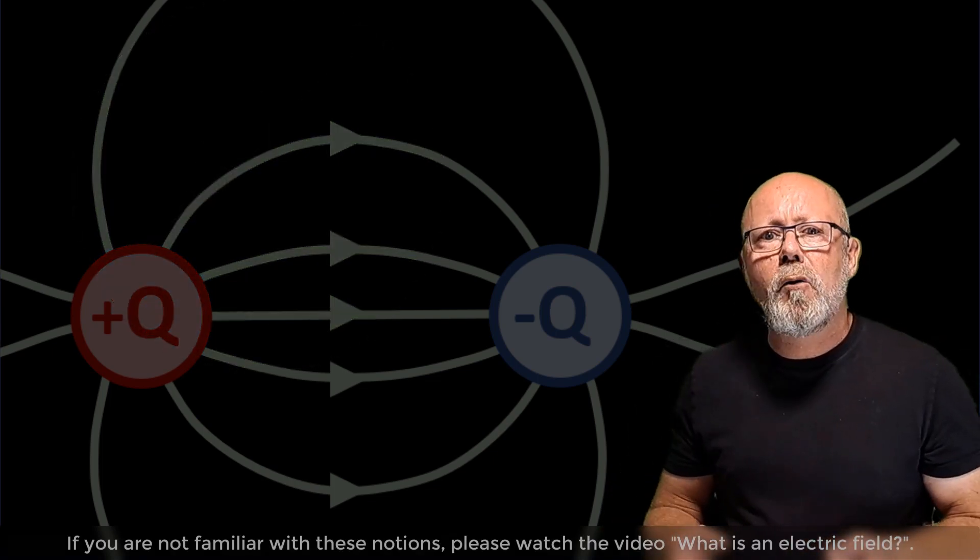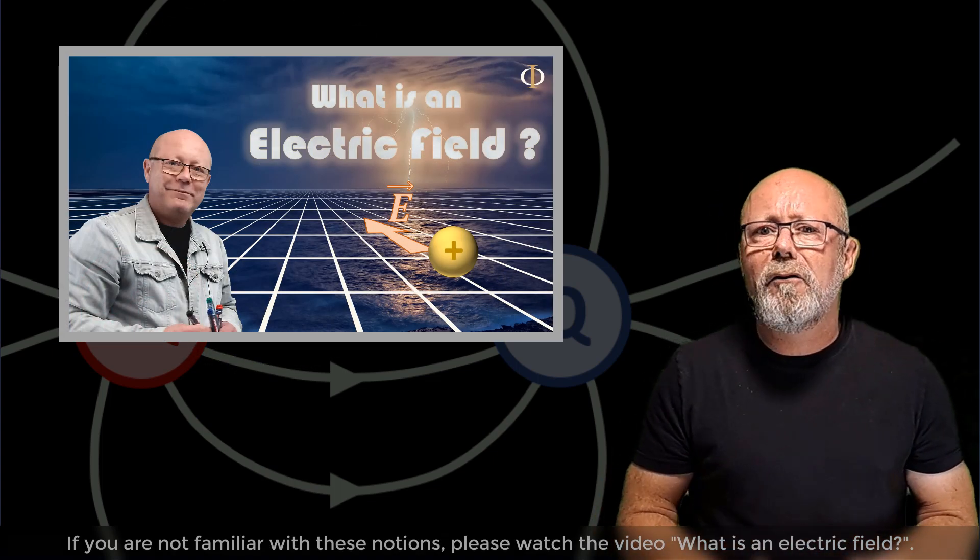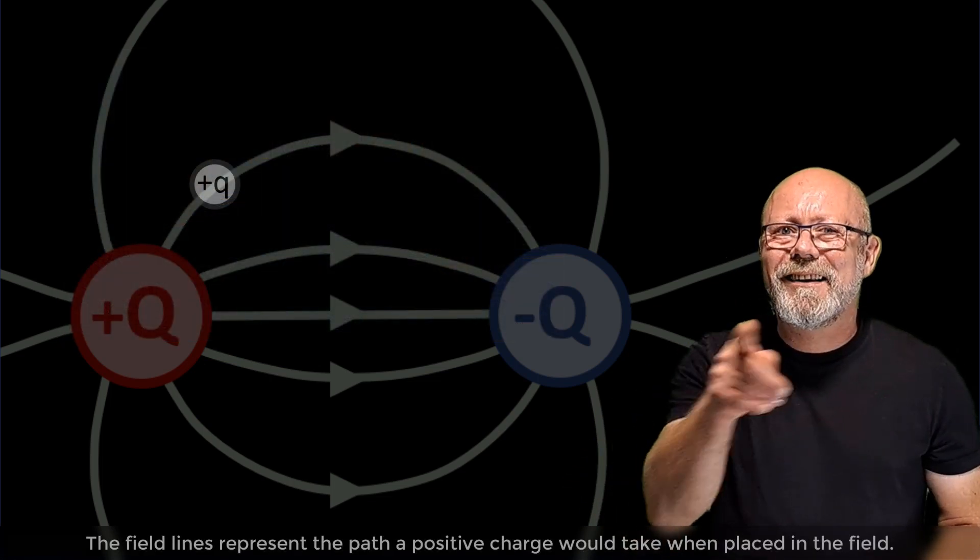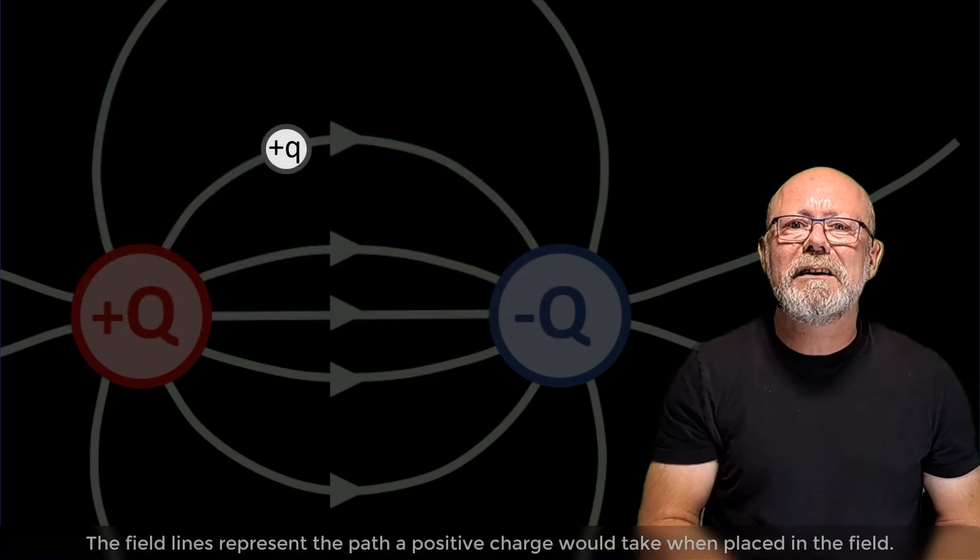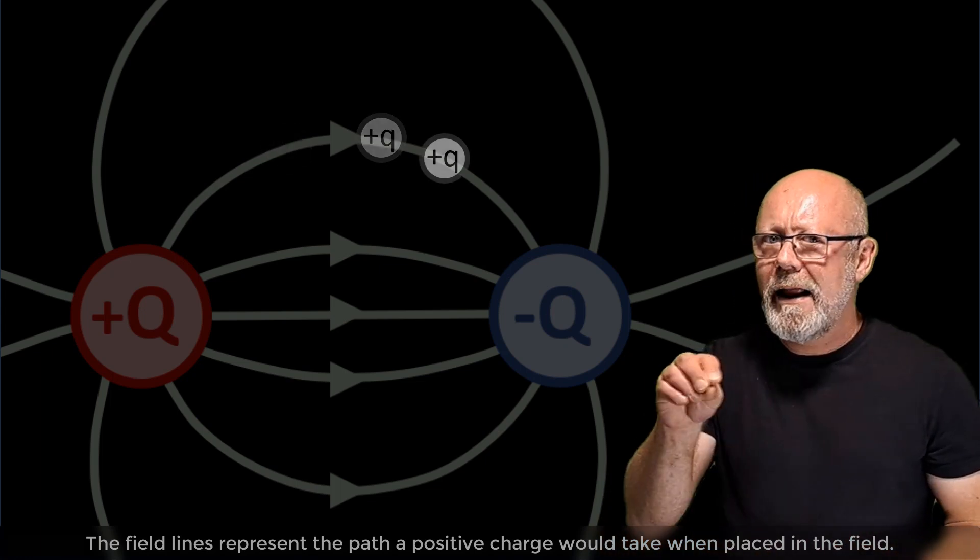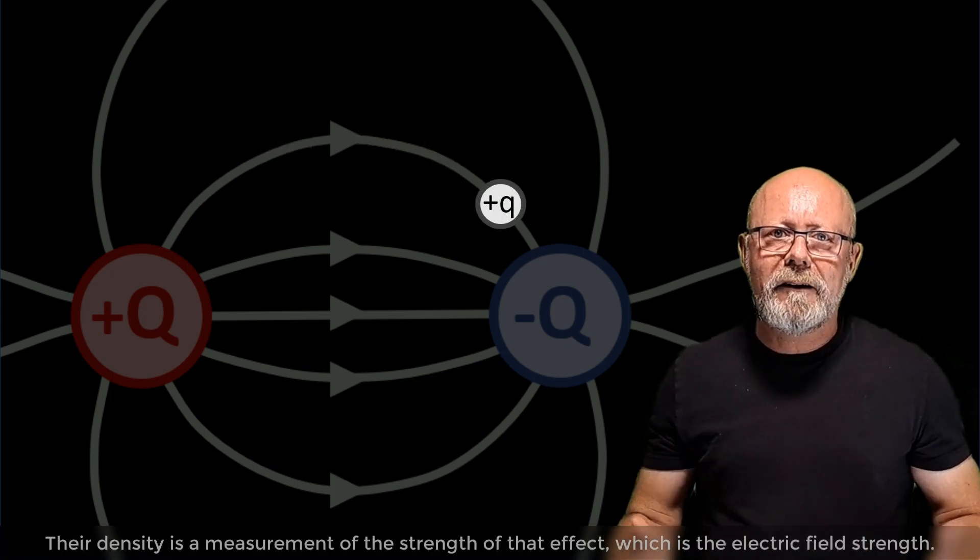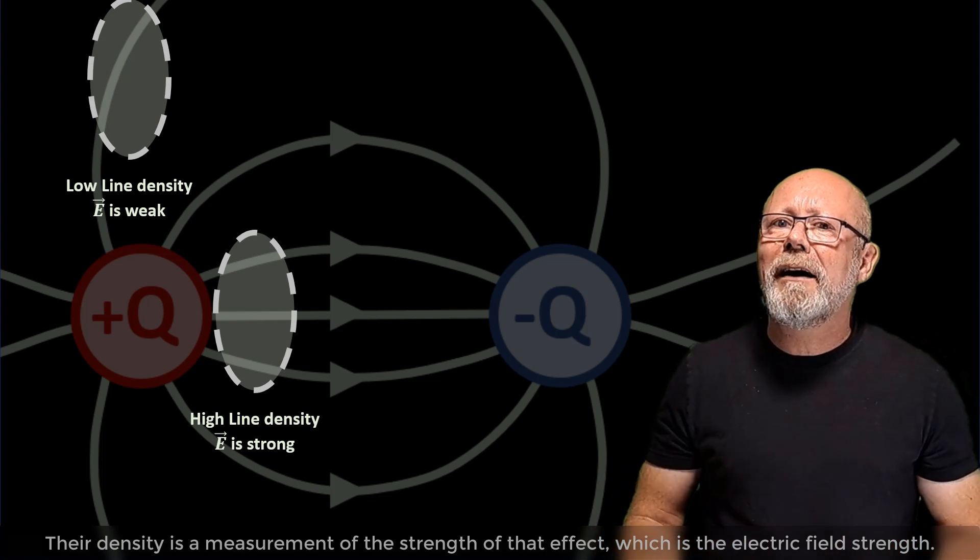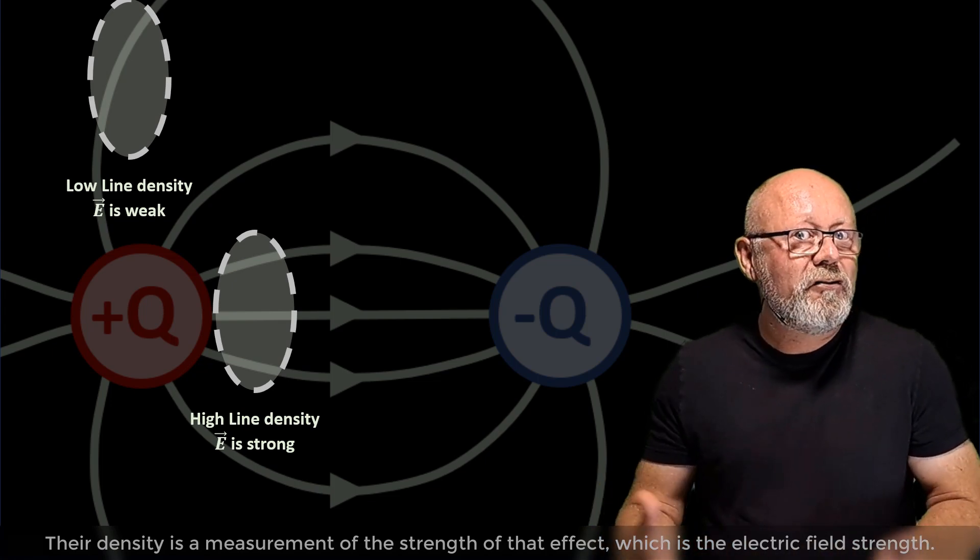If you are not familiar with these notions, please watch the video, What is an electric field? The field lines represent the path a positive charge would take when placed in the field. Their density is a measurement of the strength of that effect, which is the electric field strength.